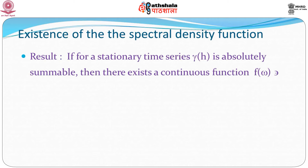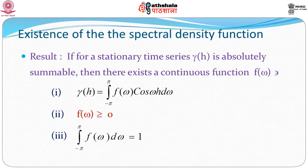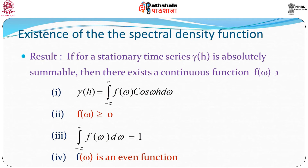Let us look at the existence of the spectral density function. If for a stationary time series γ_h is absolutely summable, then there exists a continuous function f(ω) such that γ_h = integral from −π to π of f(ω)·cos(ωh) dω. f(ω) is non-negative and f(ω) integrates between −π to π to equal 1. So for absolutely summable γ_h there is always a continuous function that acts as a spectral density function. Additionally, f(ω) is an even function, meaning f(−ω) = f(ω).